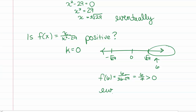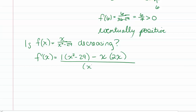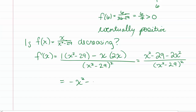The last thing to check is whether f is decreasing. Taking the derivative using the quotient rule: f prime of x equals the derivative of the top times the bottom minus the top times the derivative of the bottom, all over the bottom squared. Simplifying gives negative x squared minus 29, all over x squared minus 29 squared. The bottom is squared so it's always positive. The top is a negative number minus another number, so it's always negative. So we always have a negative over a positive, meaning this function is always decreasing.